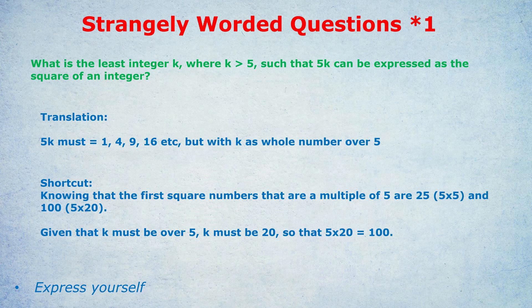Step 3 was knowing your square numbers off by heart. And finally, step 4 was realizing that we can't pick 25 because k can't equal 5. So the next multiple up of 5 that's a square number was 100. So k is 20.